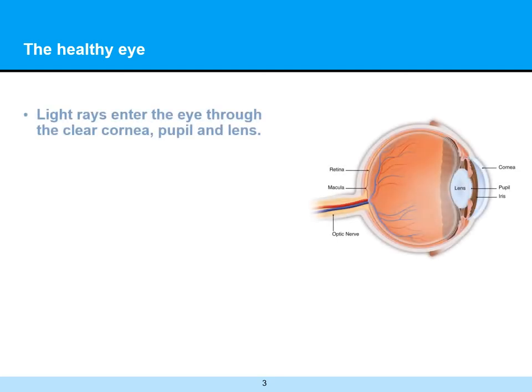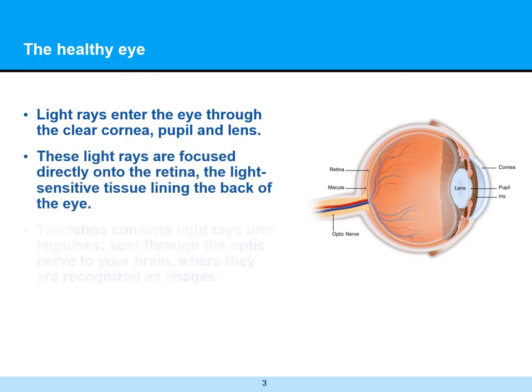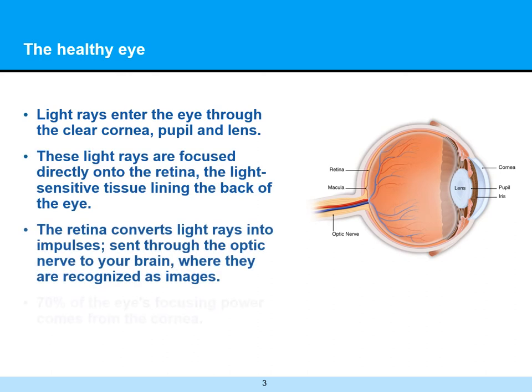To understand the eye and how it works: light rays enter the eye through the clear cornea, pupil, and lens. These light rays are focused directly onto the retina, the light-sensitive tissue lining the back of the eye. The retina then converts light rays into impulses. These are sent through the optic nerve to your brain, where they are recognized as images. Understand that 70% of the eye's focusing power comes from the cornea.